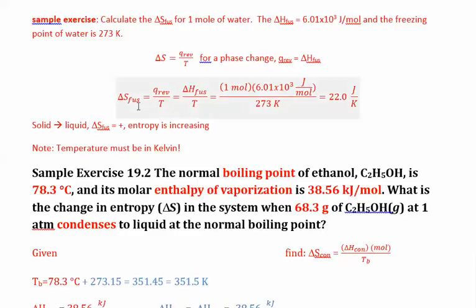We want the delta H of fusion. Delta S equals delta H over T. The enthalpy of fusion is 6.01 × 10³ joules per mole, and we have one mole, so our moles cancel. Dividing by the freezing point of 273 Kelvin gives us 22 joules per Kelvin. This is fusion — going from a solid to a liquid — and our entropy change is positive, which makes sense because entropy is increasing. Always check that your answer's sign makes sense.